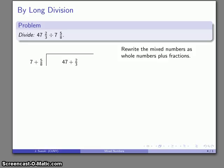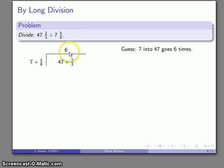So again, we'll rewrite our mixed number as a whole number plus a fraction. And we can start in almost the same way that we do a standard long division problem. 7 goes into 47, I don't know how many times, how about 6. So I'll write my dividend.